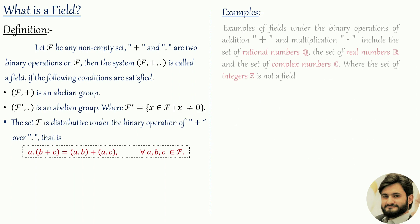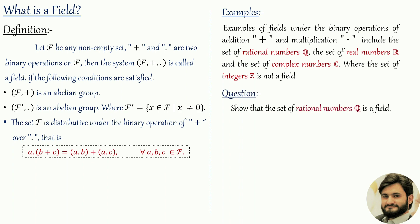Examples of fields under the binary operations of addition and multiplication include the set of rational numbers Q, the set of real numbers R, and the set of complex numbers C. The set of integers Z is not a field, because Z is not a group under multiplication.